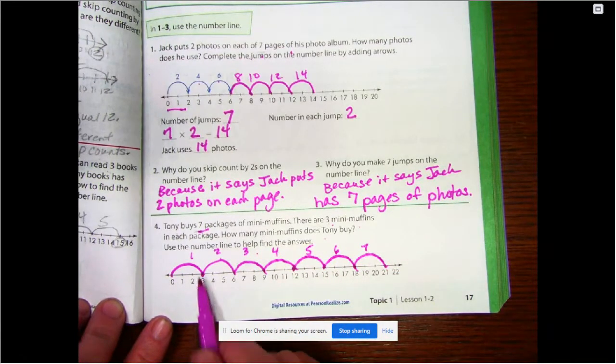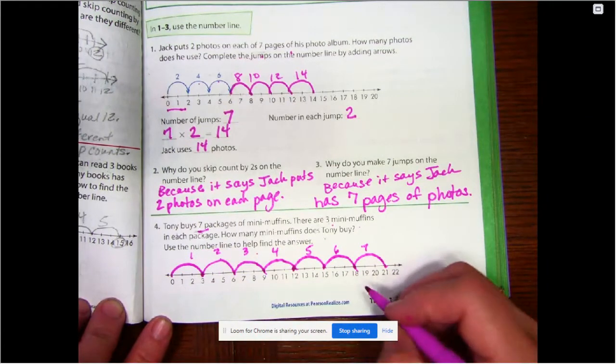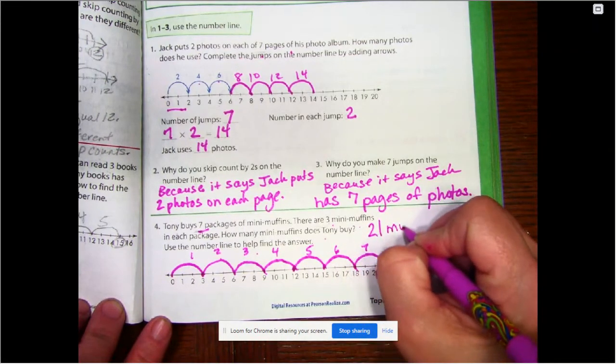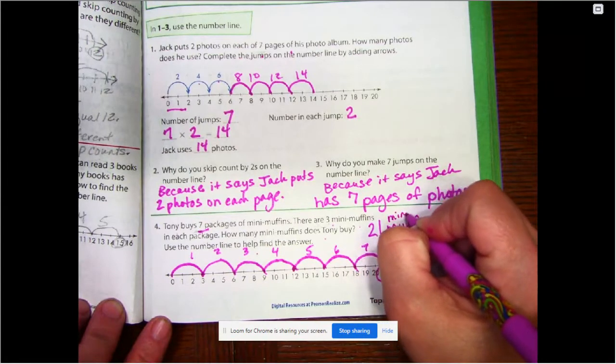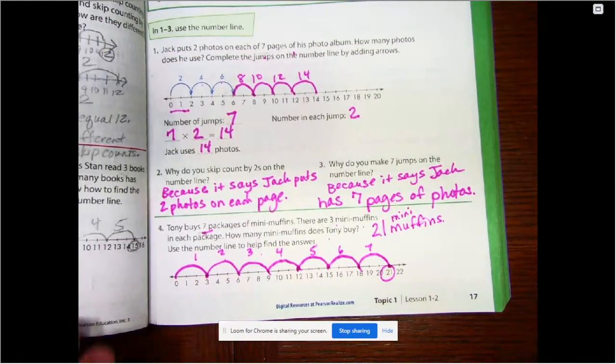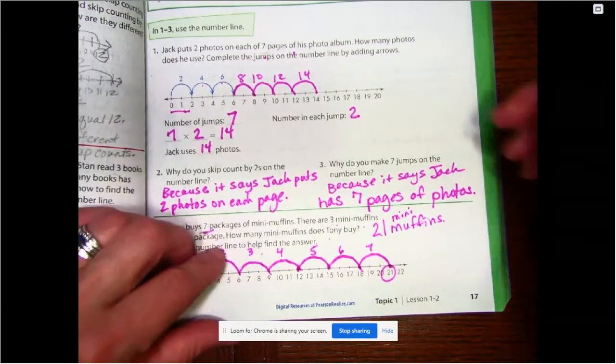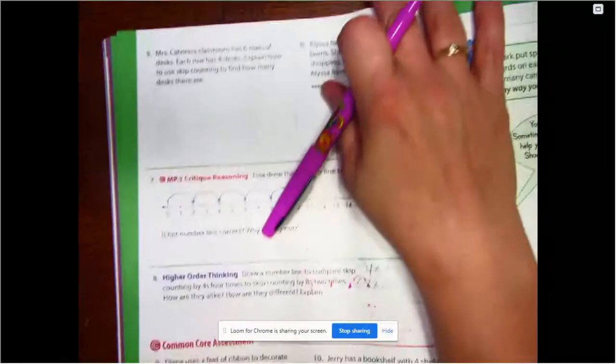We did jumps of three because it says there's three in each package. And we did seven jumps. So what is our answer? 21 muffins. Mini muffins, that is. Okay. Fix whatever you need to fix on this page. When you're finished, unpause the video and come back to number five.